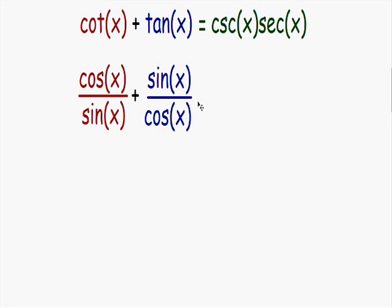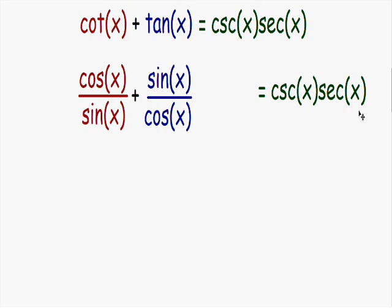Now we have rewritten the left side in terms of sine and cosine, and the right side of the equation always stays exactly the same — cosecant of x multiplied by the secant of x. Notice we have this red fraction being added with this blue fraction, so let's try and add these fractions together.